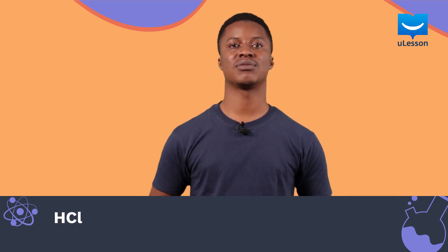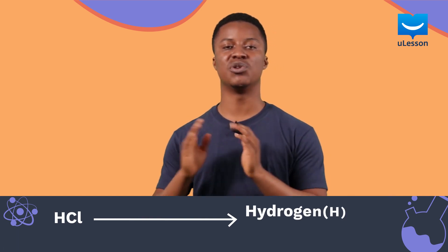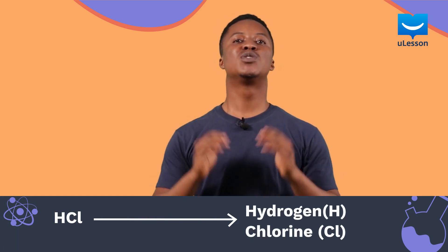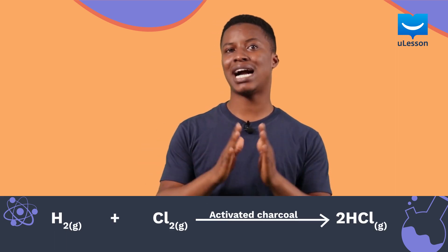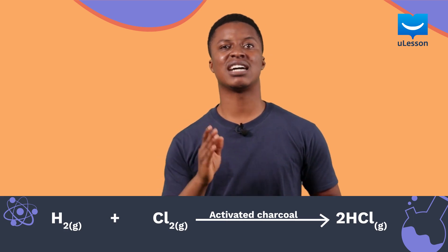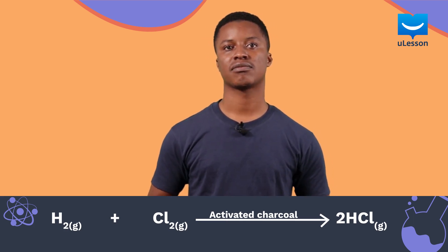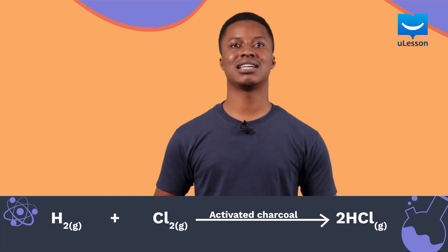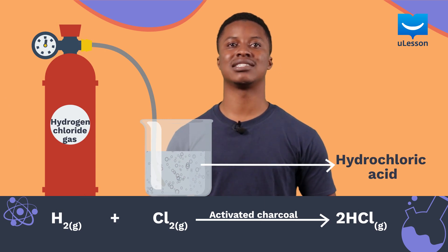For example, the chemical formula of hydrochloric acid is HCl, and its constituent elements are hydrogen and chlorine. To prepare hydrogen chloride gas, hydrogen gas can be combined with chlorine gas in the presence of a catalyst, usually activated charcoal, which speeds up the rate of the reaction. The hydrogen chloride gas can then be dissolved in water to give hydrochloric acid.